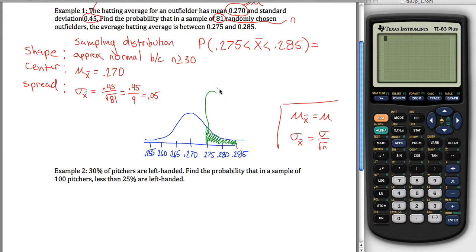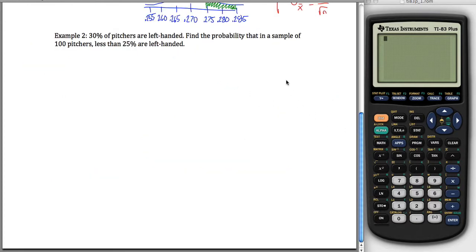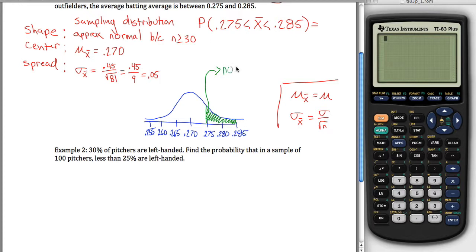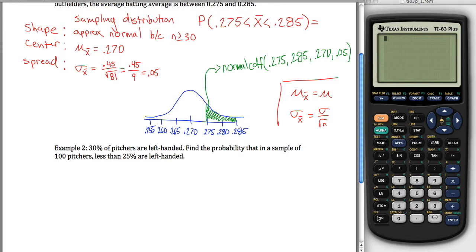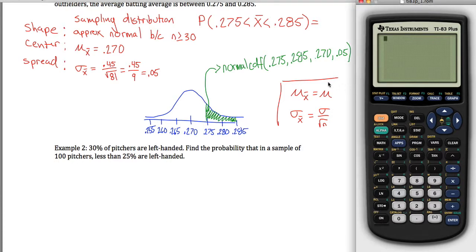And the nice thing is figuring that out is just how we figured it out in Chapter 7. We can use the normalCDF function on our calculator. The normalCDF function takes four arguments. The first argument is your lower endpoint, which in this case is 0.275. The second argument is your upper endpoint, 0.285. And then the third argument is your mean, 0.270. And the fourth argument is your spread, your standard deviation. Be careful here, it's not 0.45, it's 0.05. Putting in 0.45, you'll get the probability that a single outfielder has an average between 0.275 and 0.285. But by putting in 0.05, we get the probability that the average of the 81 outfielders in our sample is between 0.275 and 0.285. If it seems like I'm beating that to death, I am, because it's really the most important concept with sampling distributions.